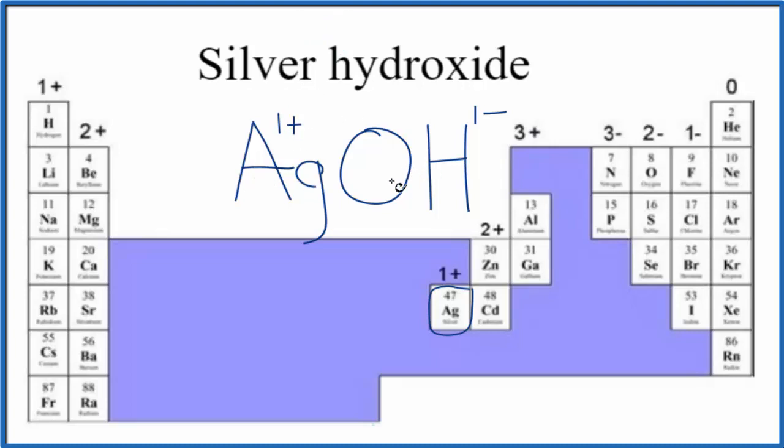So we have our metal, our nonmetals. It's an ionic compound. The charges need to add up to zero. 1 plus, 1 minus. That gives us a net charge of zero. So this is the formula for silver hydroxide.